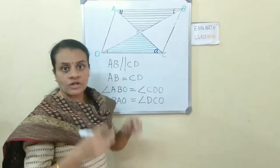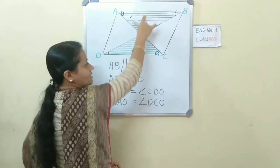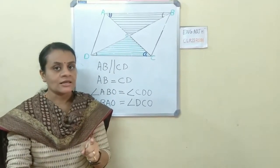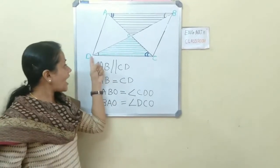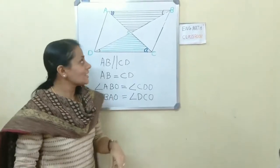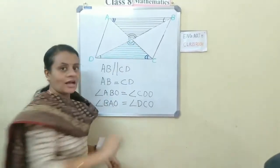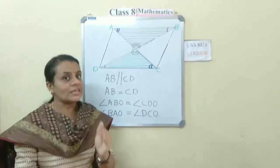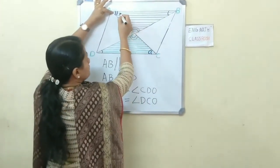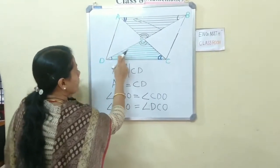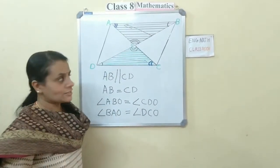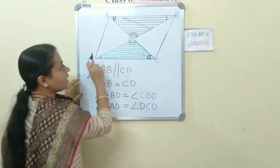Now look at these two triangles. One common side and the angles at its ends are equal. One side of a triangle and the angles at its ends are equal to one side of another triangle and angles at its ends — so the third angles are also equal. And the side opposite to equal angles are equal. OB is the side opposite to angle A, and OD is opposite to angle C. Since angle C and angle A are equal, we can say OD equals OB.